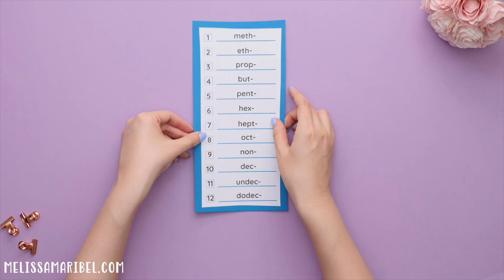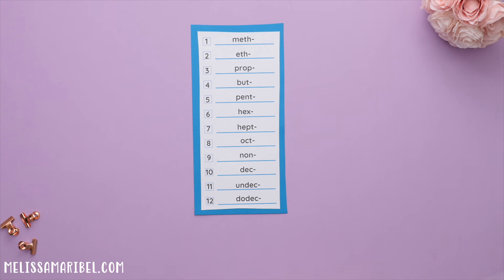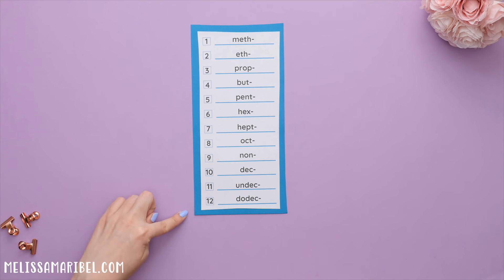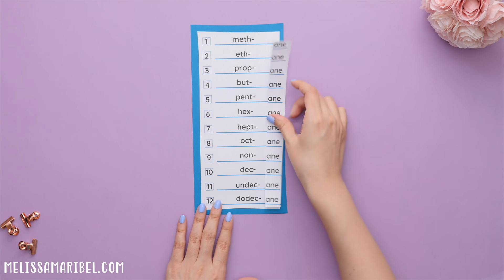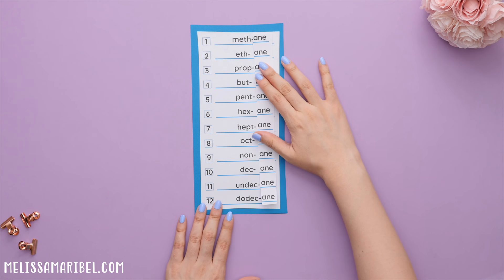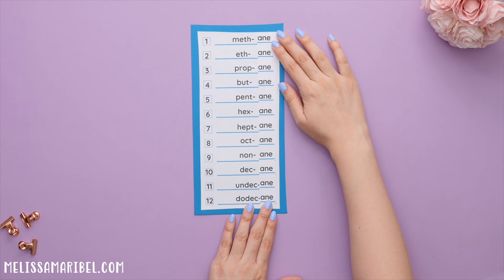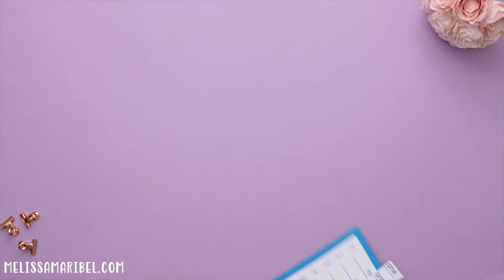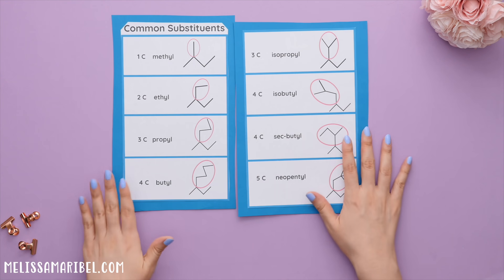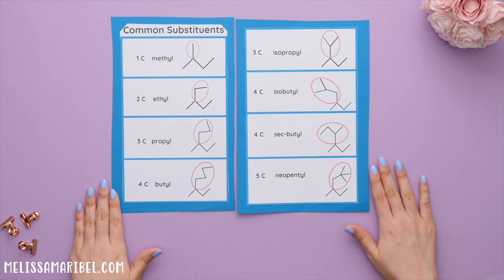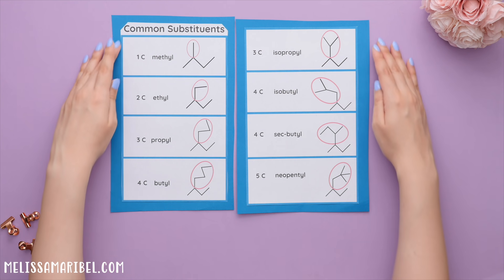This first table shows the prefixes for the different lengths of carbon chains you may see. Since we are naming alkanes, every structure name will end with "-ane." This second table shows the most common types of substituents you will need to know.